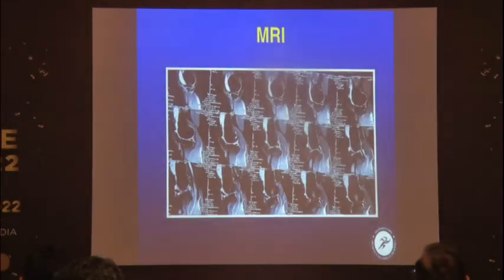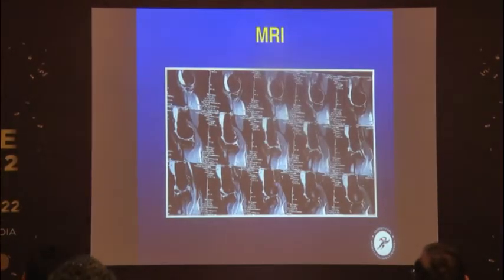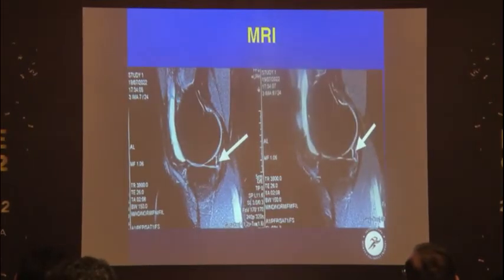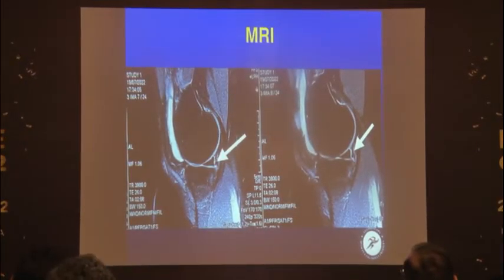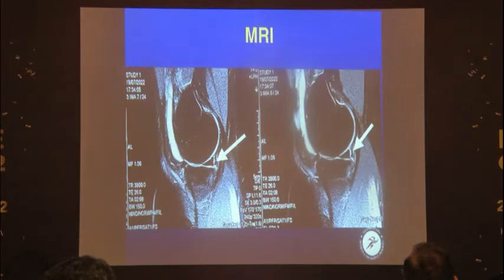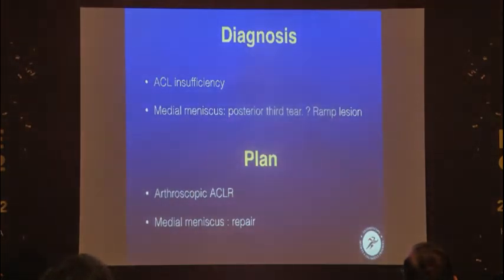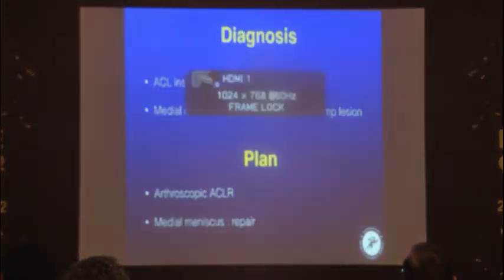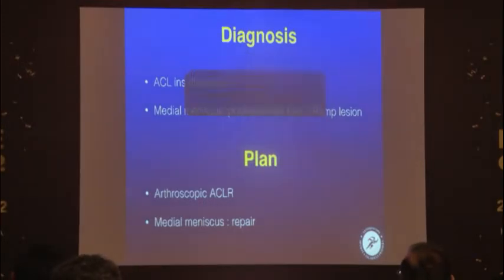On MRI, if we look closer, this is a finding which should not be missed. There was no ACL. The diagnosis was an ACL-deficient knee with a medial meniscus injury, probably in the ramp region. You should have a high index of suspicion for this lesion.